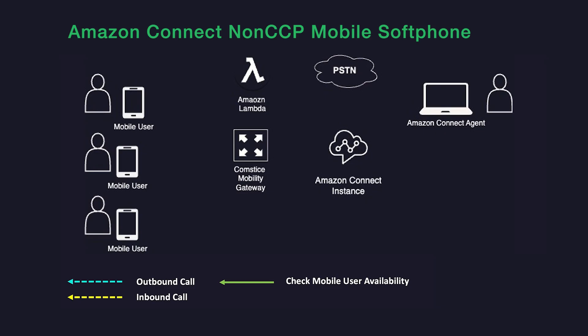In this solution, ComSys mobile softphones register to your ComSys Mobility Gateway. When the mobile softphone makes a call, the Mobility Gateway triggers an Amazon Connect contact flow and sends the call to another agent or to the PSTN.